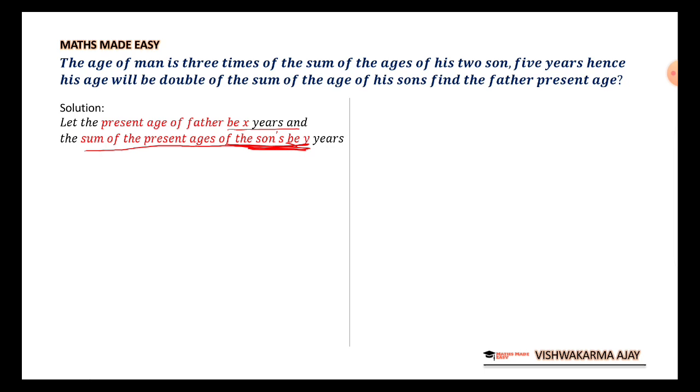So, to equate it, we need to multiply the age of son with three. So, it is balanced. It will be equated. That's why we have our first equation as X is equal to 3Y.